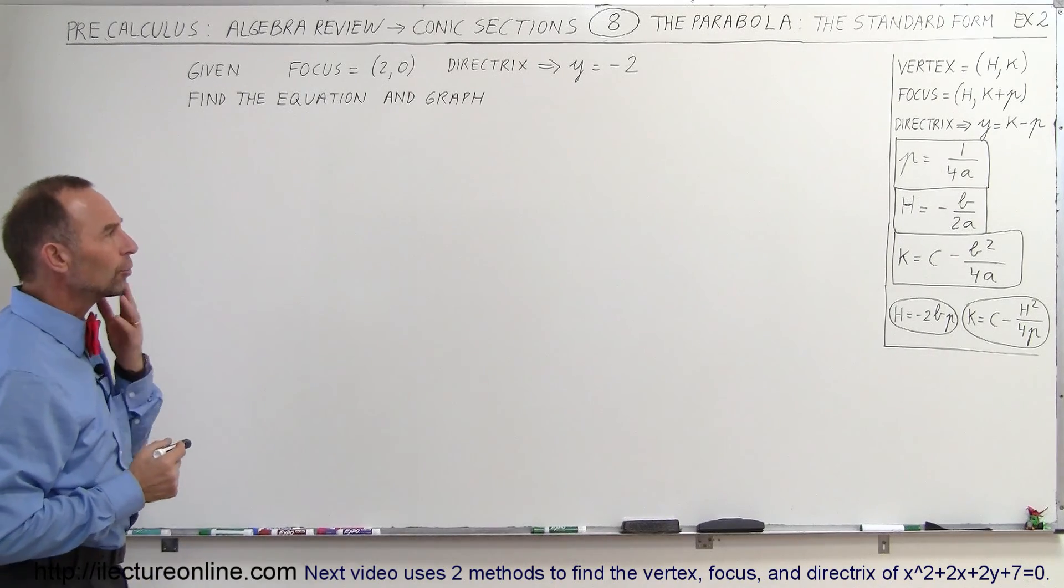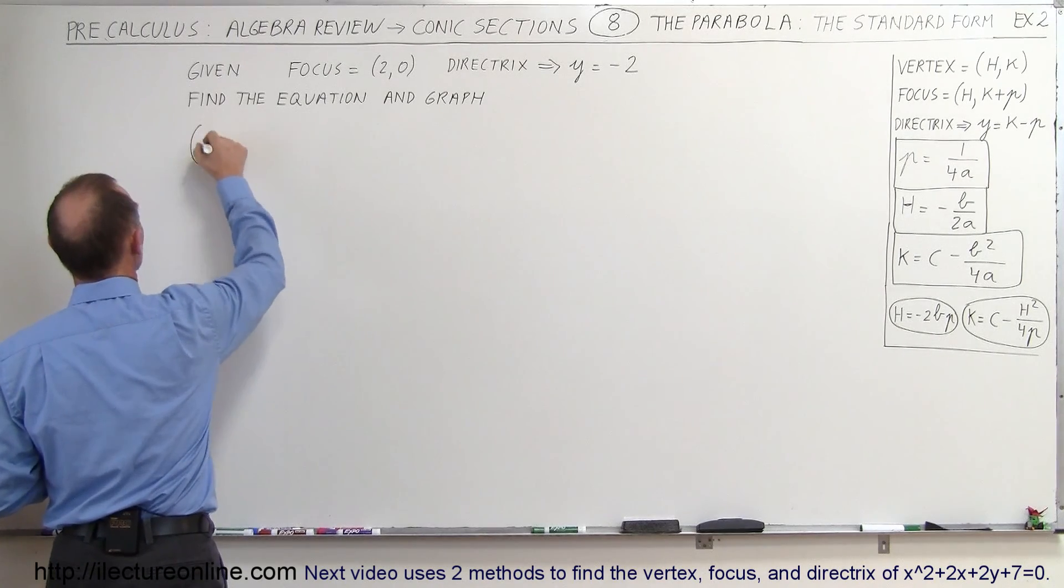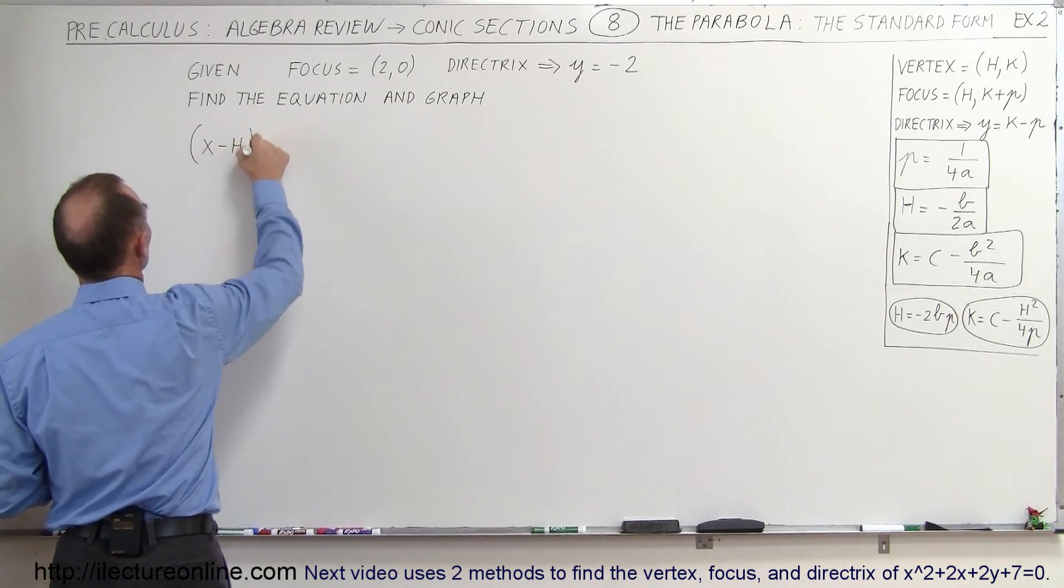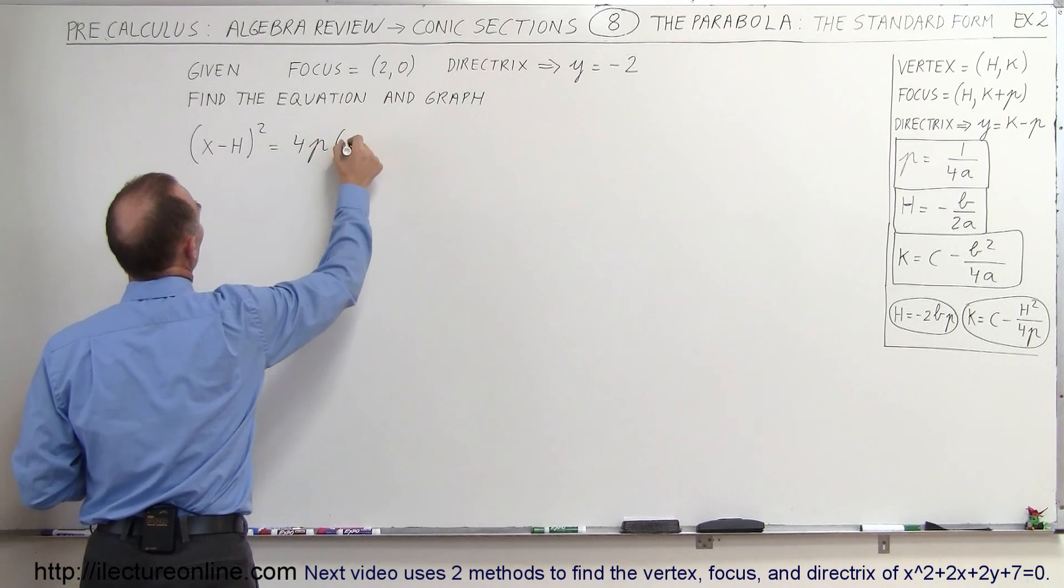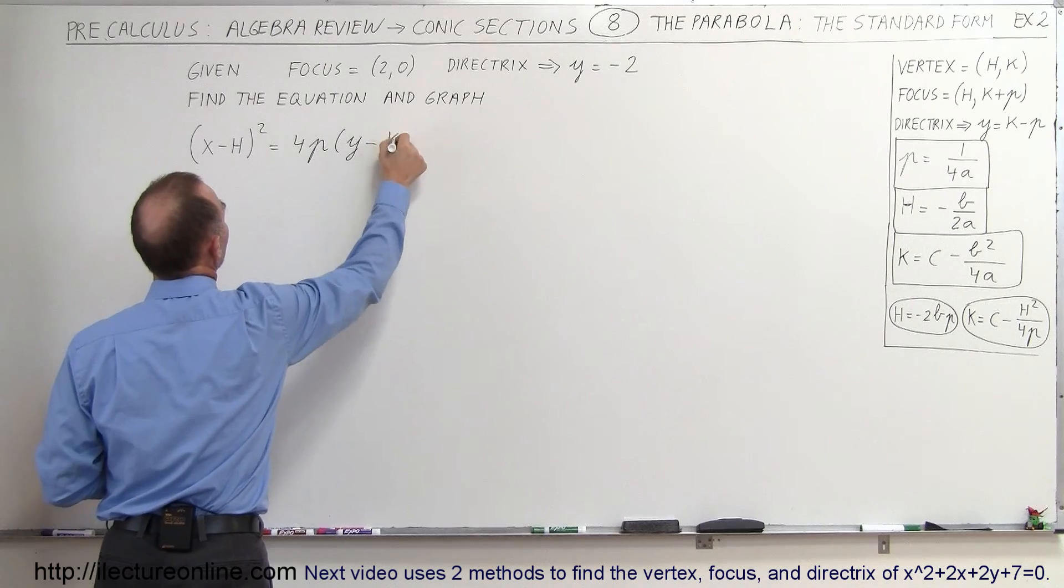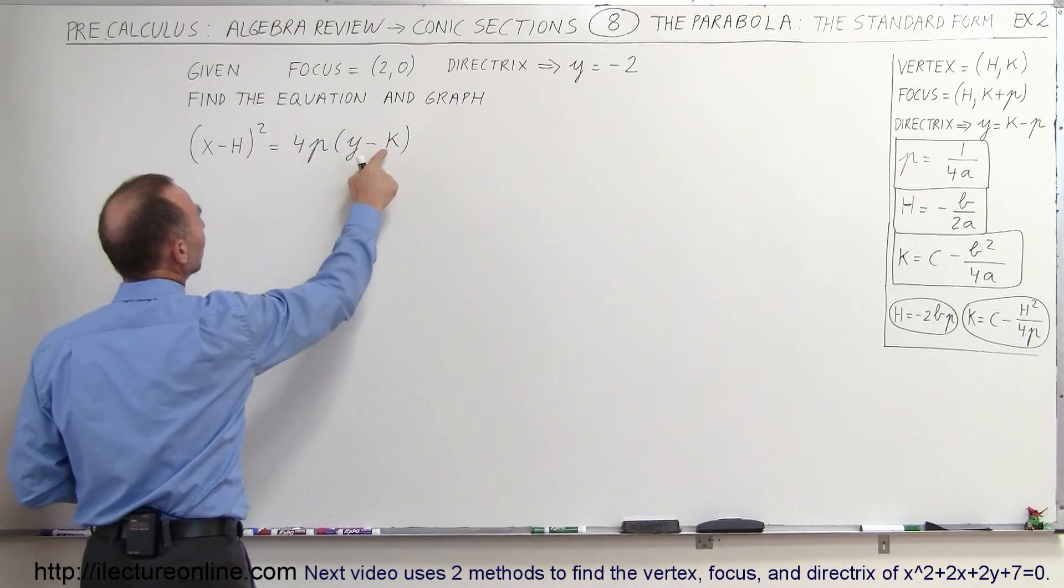Okay, so in order to do that let's write down the standard form of the equation, the general form. That would be the quantity (x - h)² = 4p(y - k). So that means I need to know what p is, what h is, and what k is equal to.